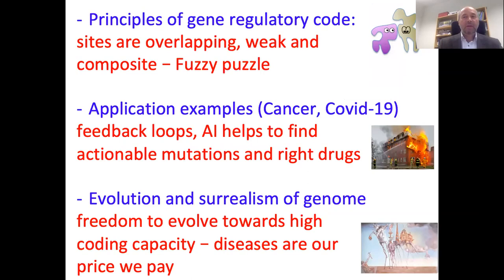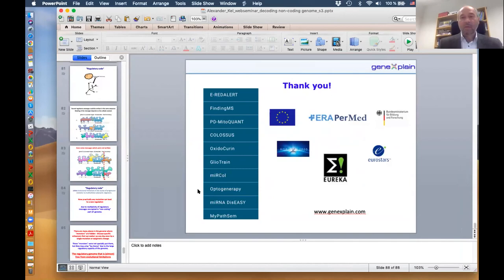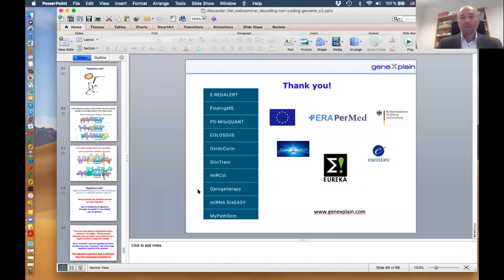As you know, for freedom you have to pay — and we pay with diseases. To summarize: in the principles of regulatory code, we talk about overlapping sites, weak binding, and sites working in composite modules — the fuzzy puzzle. We applied this concept to cancer and COVID-19 and saw that many diseases work through feedback loops, but artificial intelligence can help us find actionable mutations and the right drugs. At the evolutionary level, the surrealism of the genome — its freedom to evolve toward high coding capacity — is the direction, but disease is our price to pay.